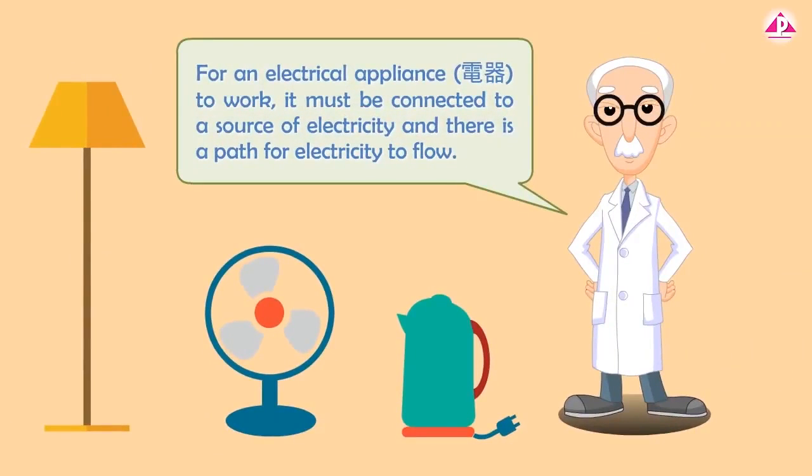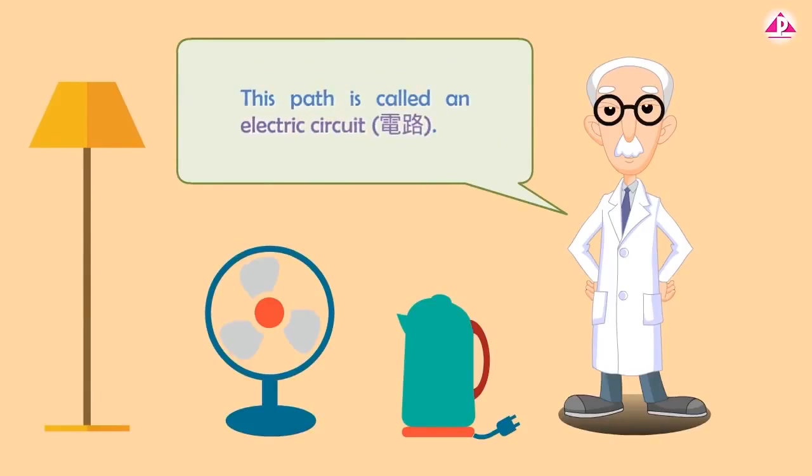For an electrical appliance to work, it must be connected to a source of electricity, and there is a path for electricity to flow. This path is called an electric circuit.